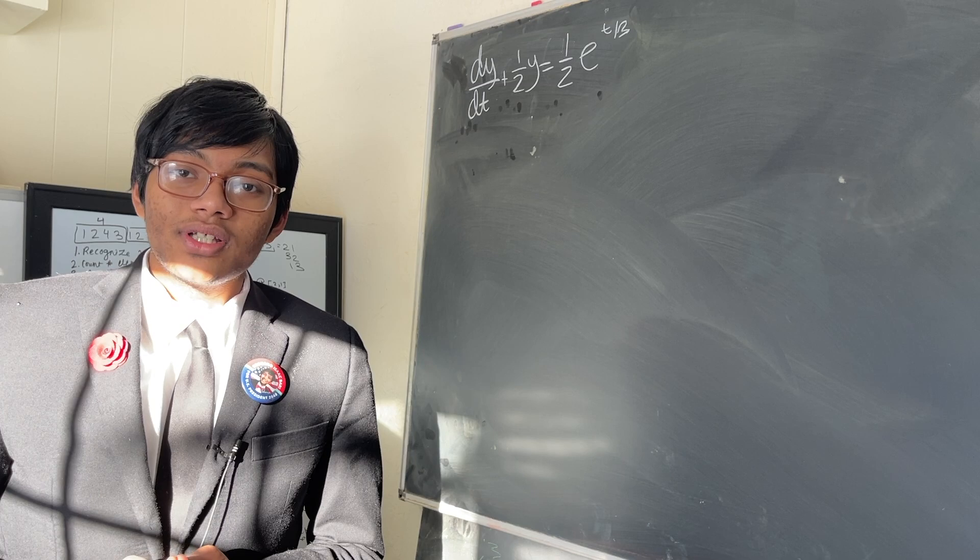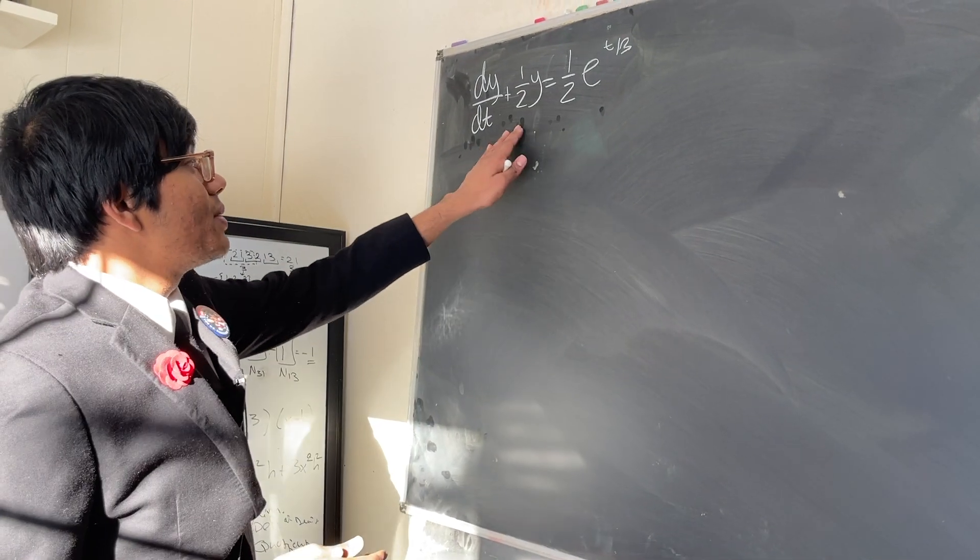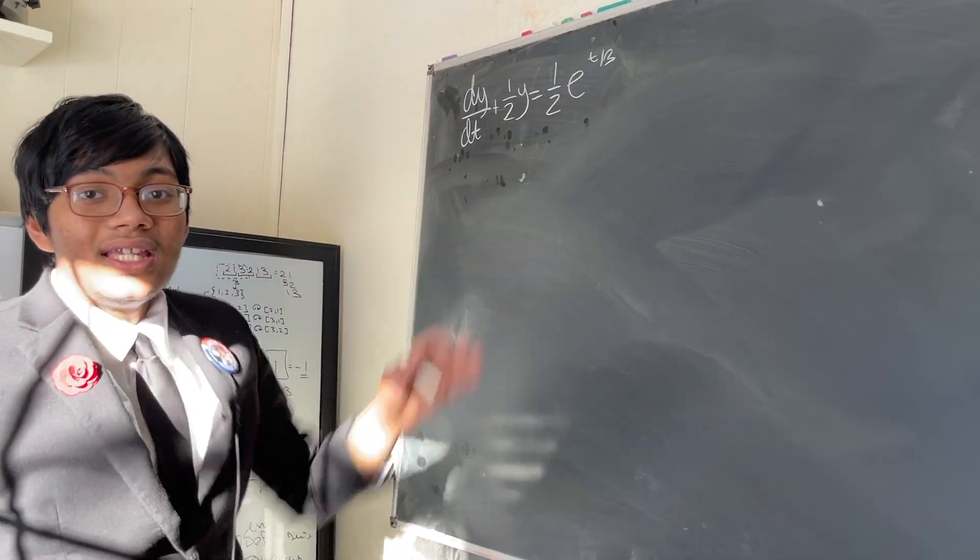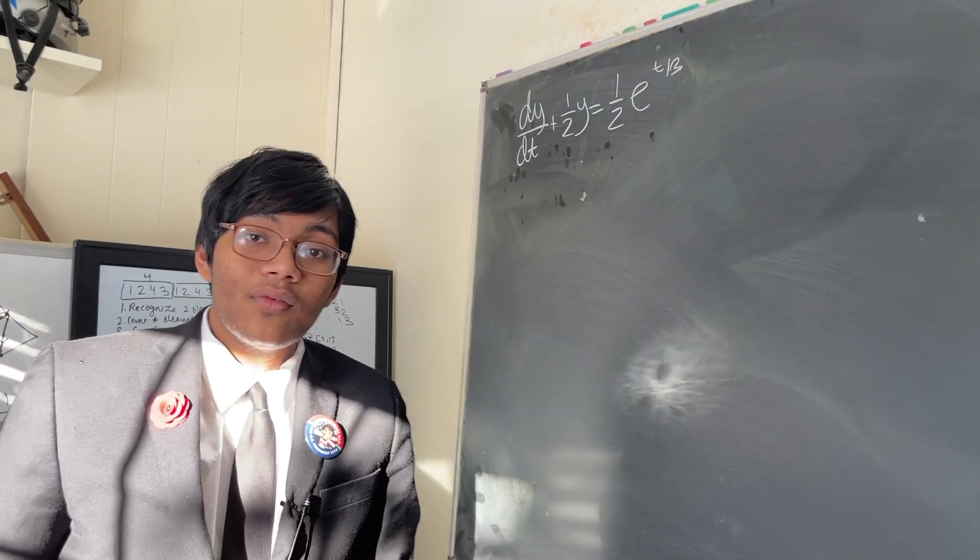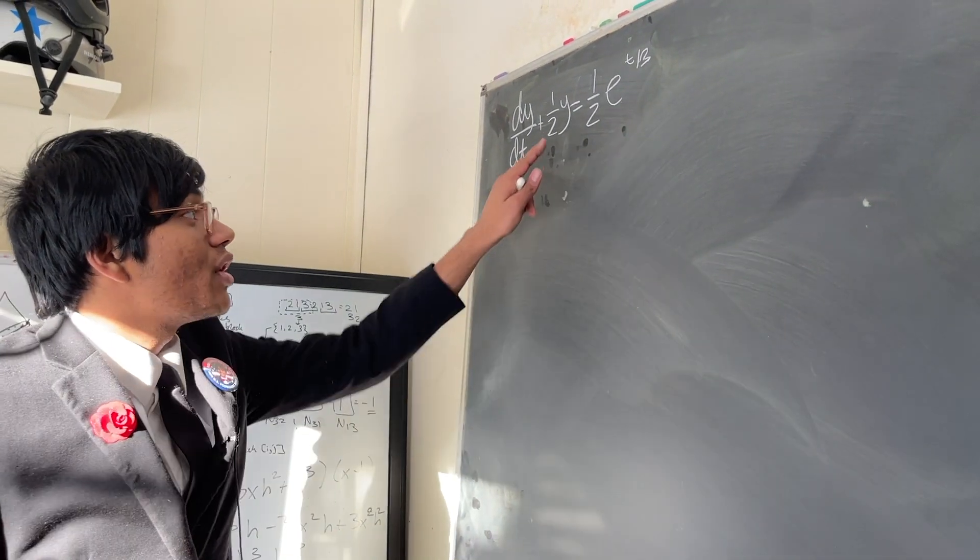Here's the differential equation we're tasked with solving: dy/dt plus half y is equal to half e to the t over 3. Now all we have to do here is solve for y.